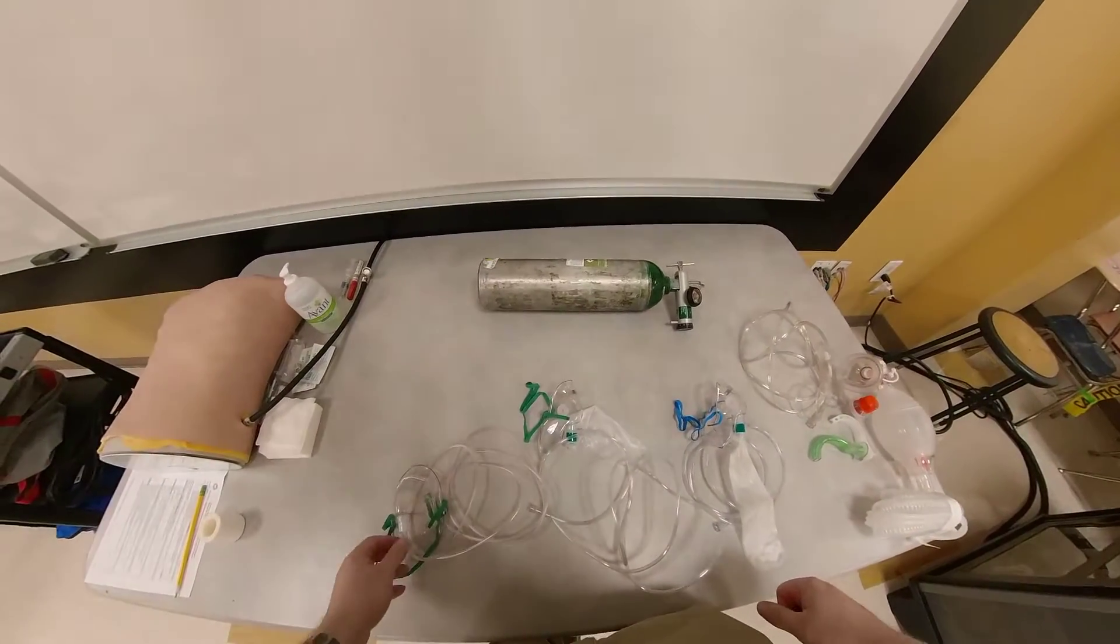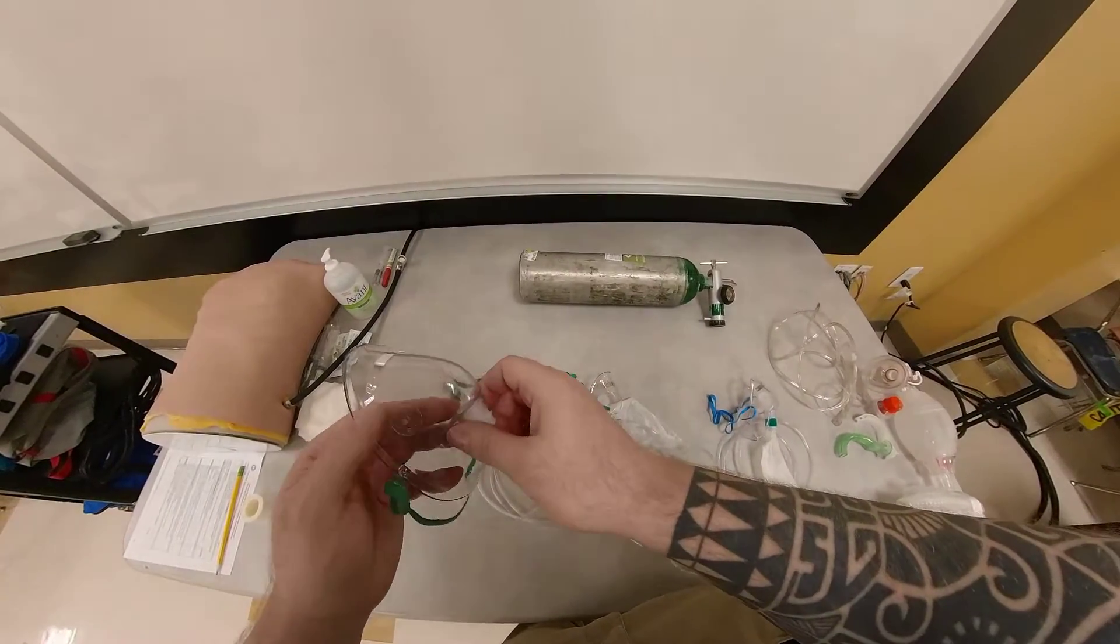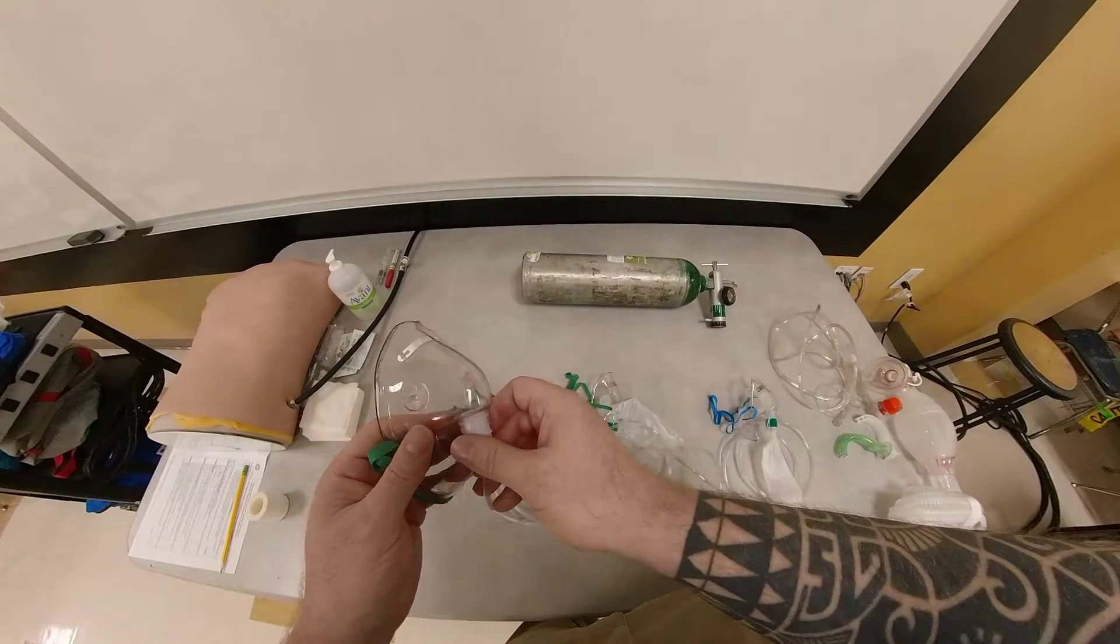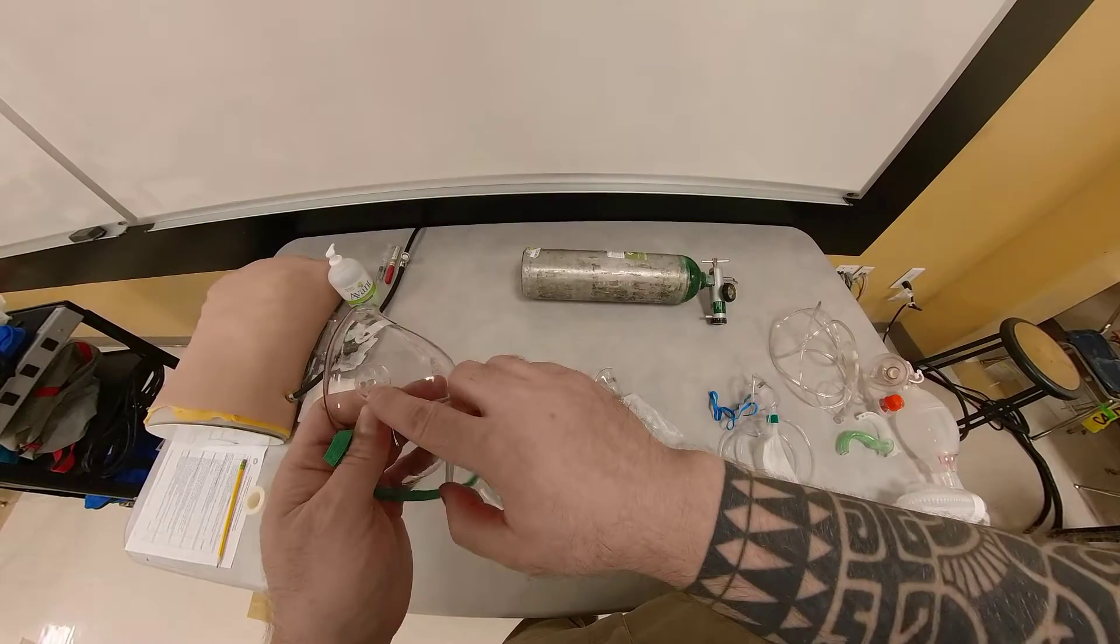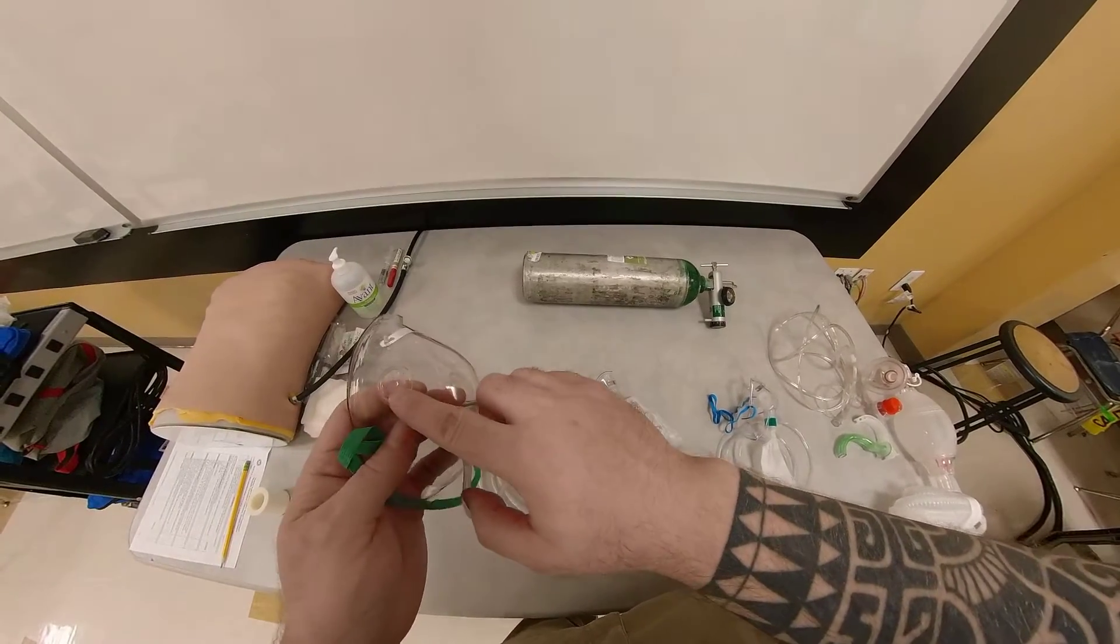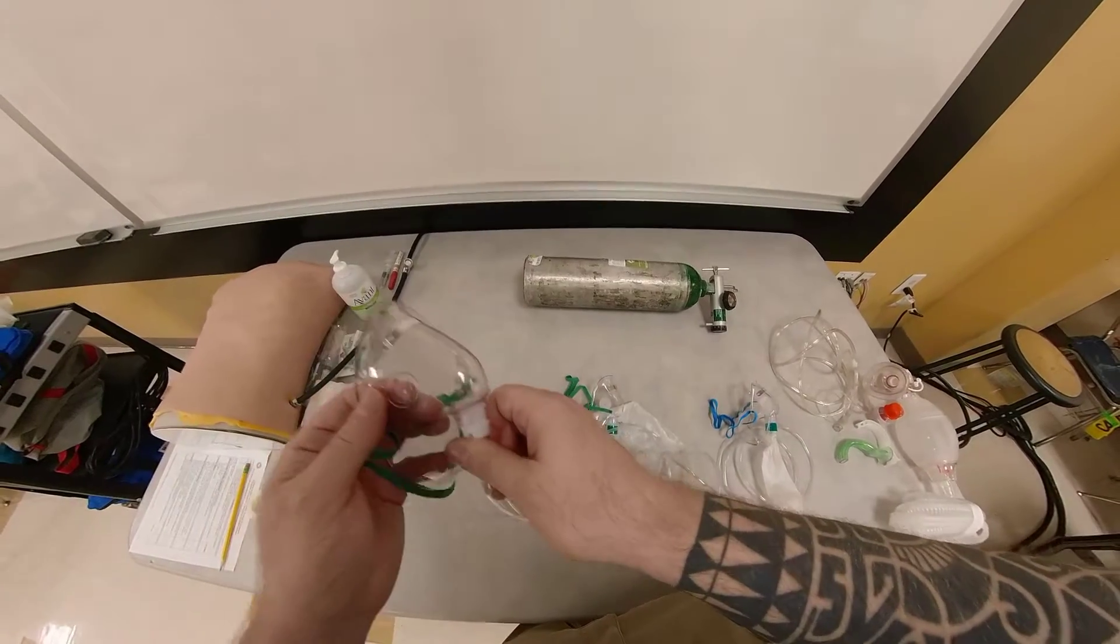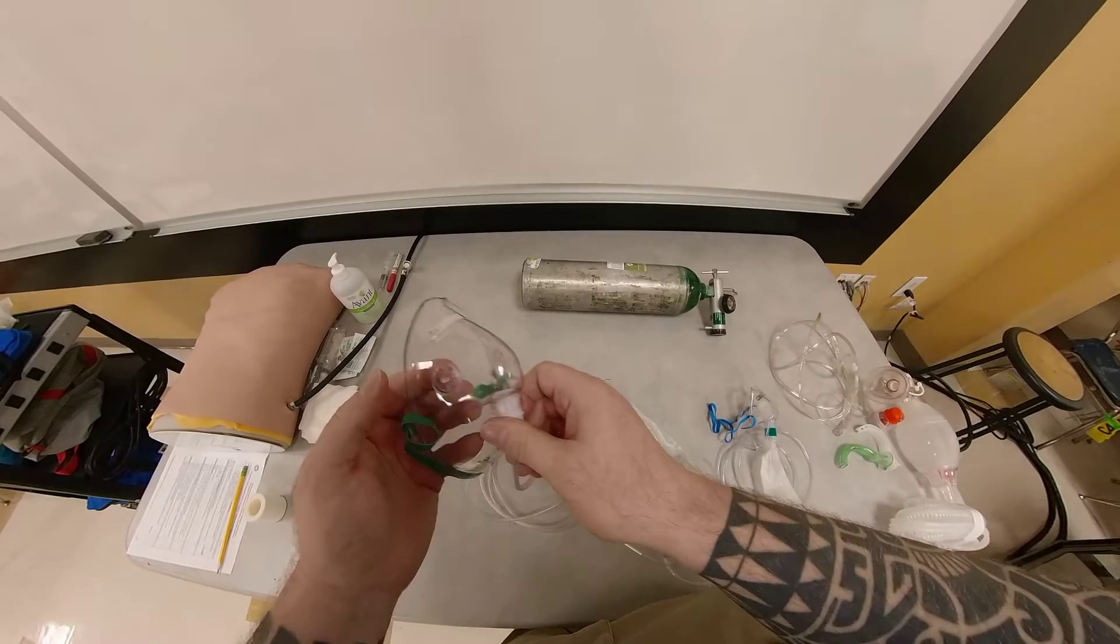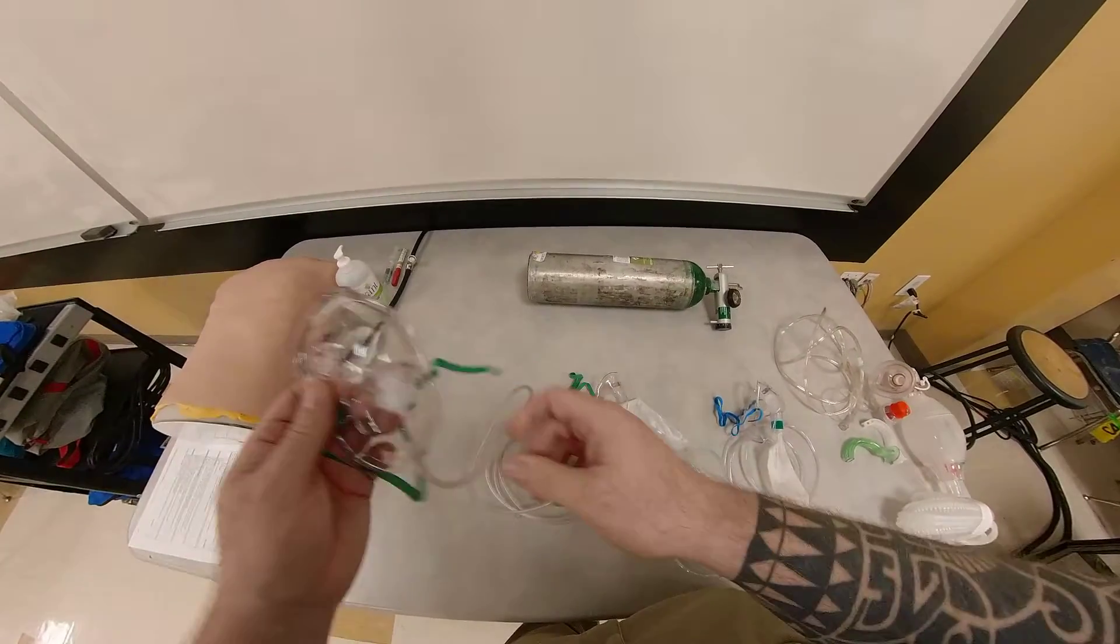So first of all, let's start with something basic. This here in my hand is called a simple face mask, which you notice doesn't have a reservoir bag. And also, if you look at these openings here, there's no one-way valves. So there's openings that connect this to room air, and room air is composed of about 21% oxygen and 79% nitrogen. So the patient is not getting 100% oxygen through this device.